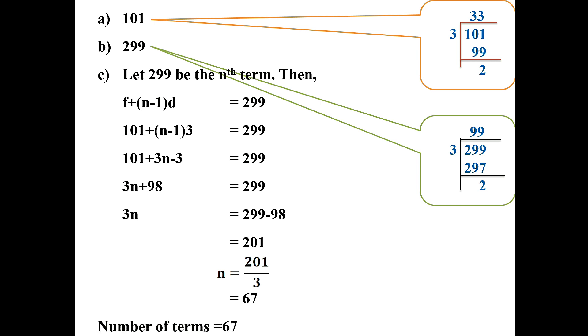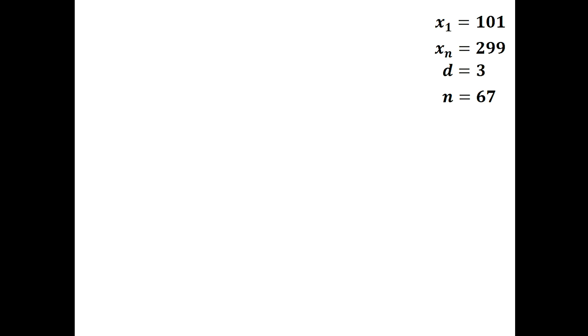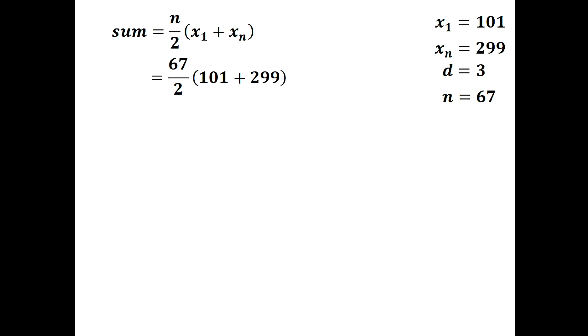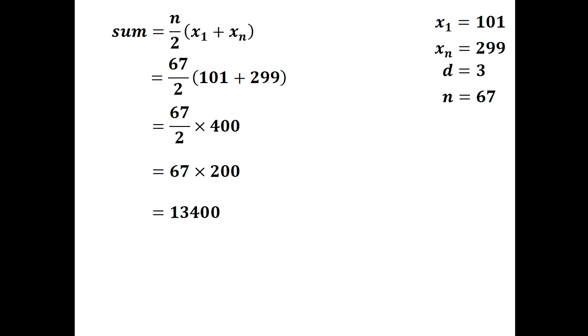Now finding the sum: with first term 101, last term 299, and 67 terms, the sum equals n by 2 into (first term plus last term) = 67 by 2 into (101 plus 299) = 67 by 2 into 400 = 67 into 200 = 13,400. The sum of all numbers in this sequence is 13,400.